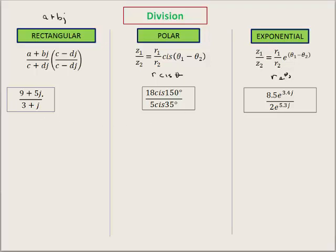On the rectangular format, you need to multiply by the conjugate. We covered this in one of the early videos, but I will remind you — the conjugate of 3 plus j changes the symbol. So the conjugate is 3 minus j. We need to multiply this first rectangular format by the conjugate. This now becomes a multiplication problem.